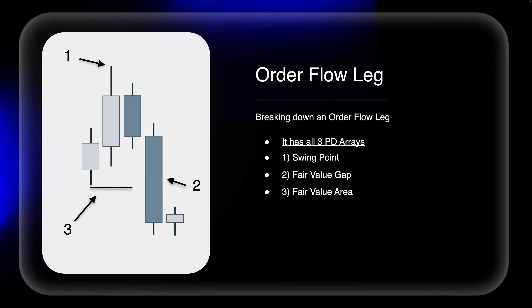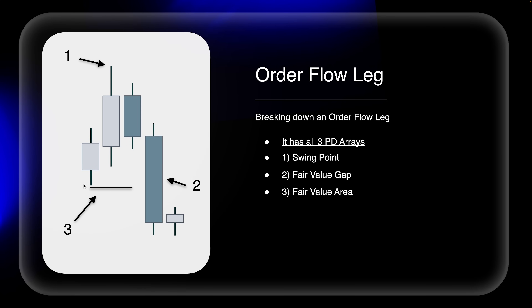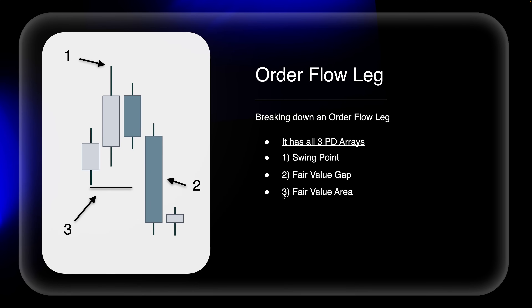A fair value area in this context is from an intermediate term low towards an intermediate term high and vice versa. But what did we just establish? An intermediate term high is the same as a short-term high, and an intermediate term low is the same as a short-term low. So this is a fractal understanding of a fair value area. Order flow tells us the intention of price — this is where it gets even more interesting.